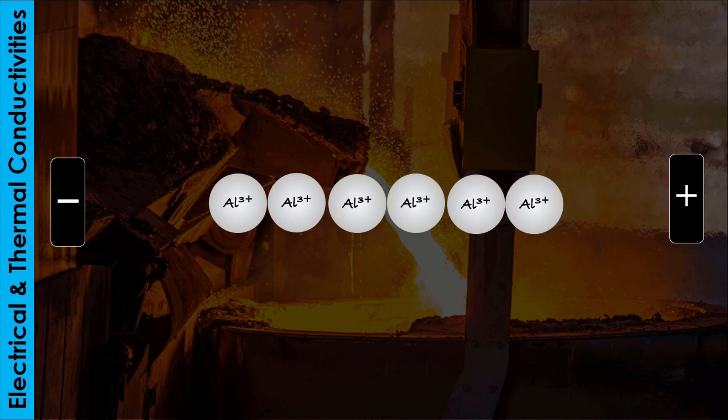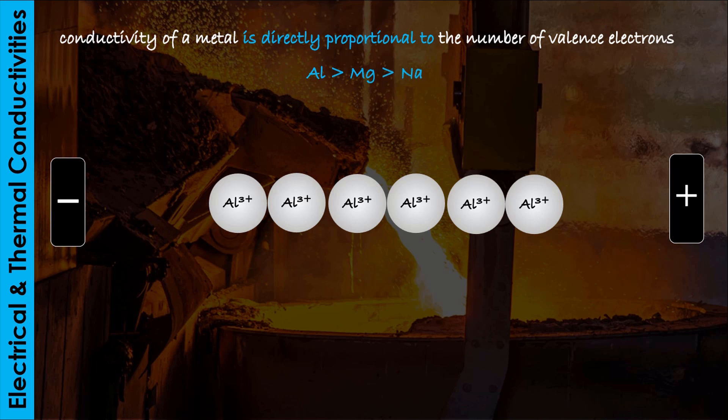At this point, it is important to note that the electrical and thermal conductivities of a metal depend on the number of valence electrons present in the atom of that metal. And the higher the number of electrons in the valence shell of a metallic atom, the higher its electrical conductivity. This explains why aluminum is a better conductor of heat and electricity than magnesium and sodium.